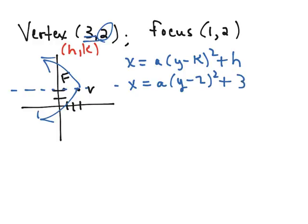Now we pretty much have our equation but we need to solve for a. a is equal to 1 over 4p and p is the directed distance between the vertex and the focus. So this distance is p. If you start at your vertex and go to your focus you would go left 2.